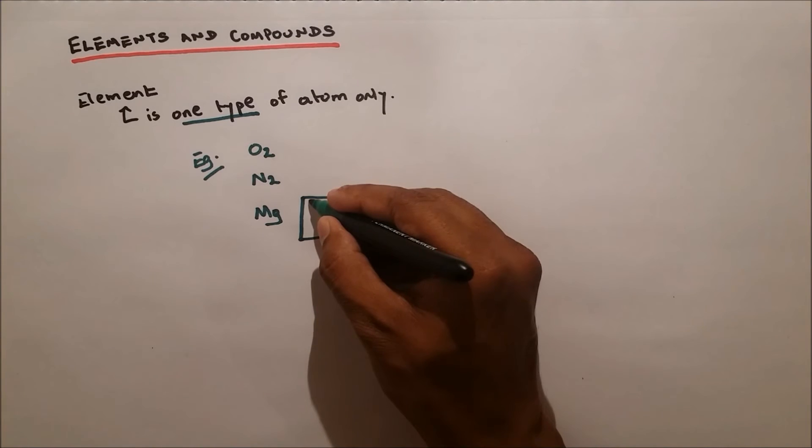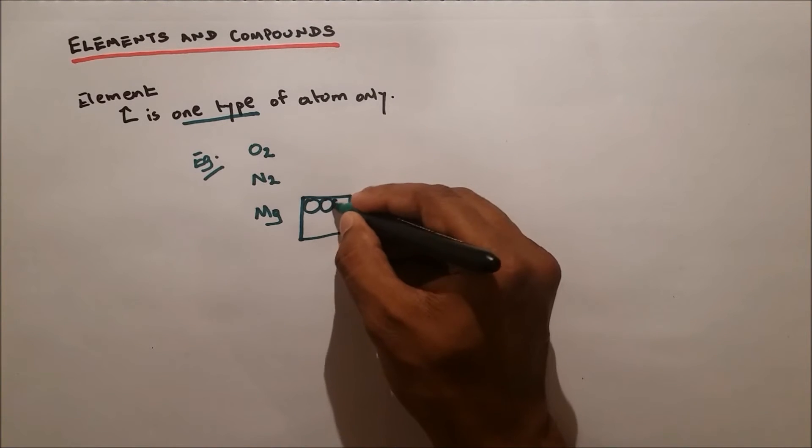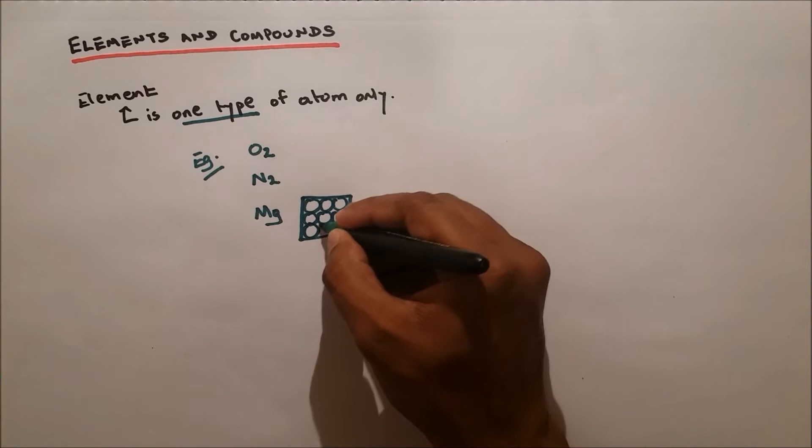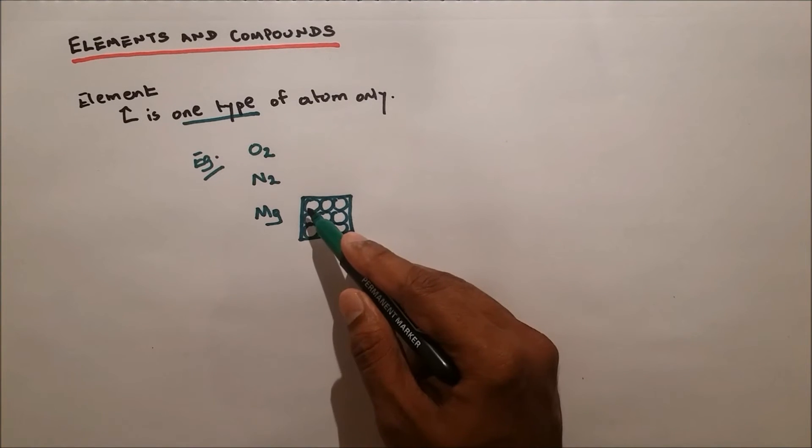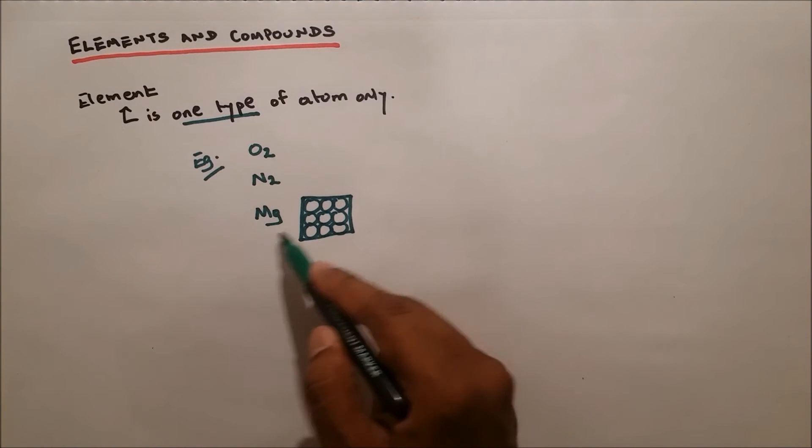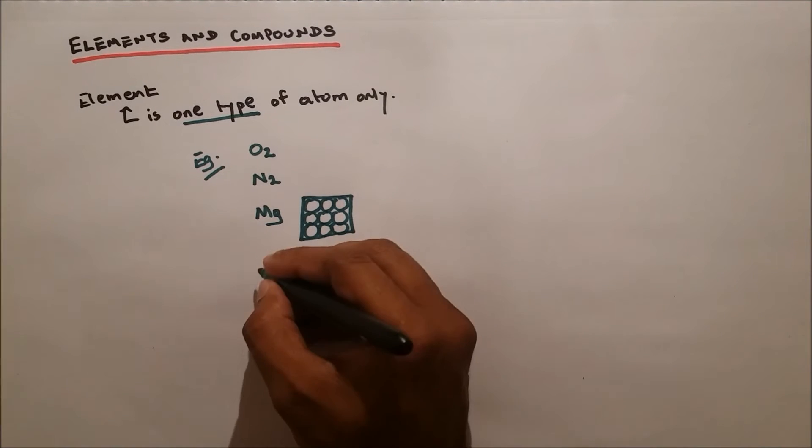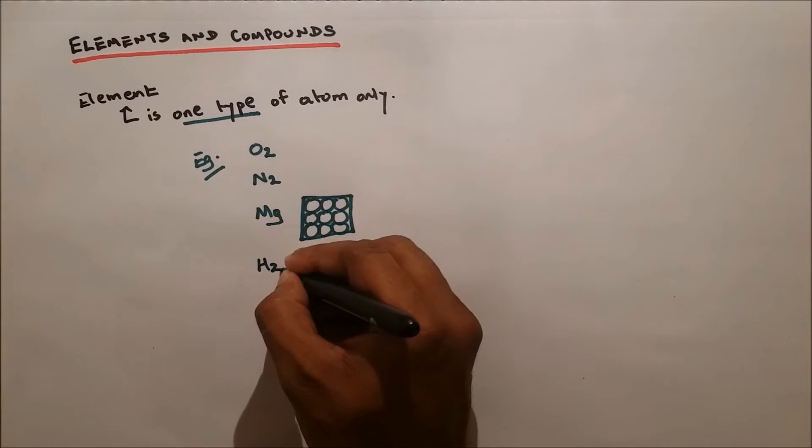Now magnesium is an element. If you take solid magnesium, you will see that the solid is composed of particles of magnesium and they are one type. All these are magnesium, so Mg on its own is an element. Other examples would be hydrogen.